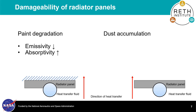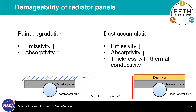On the other hand, dust accumulation will cover the surface of the radiator panels regardless of whether there is paint degradation or not. Additionally, it adds an extra layer of thickness to the radiator panel, resulting in less effective heat conduction through the depth of the radiator panels. This behavior is reflected in the code by changing the absorptivity and emissivity parameters to those of lunar dust, as well as adding a thickness of the dust layer with lunar dust conductivity.